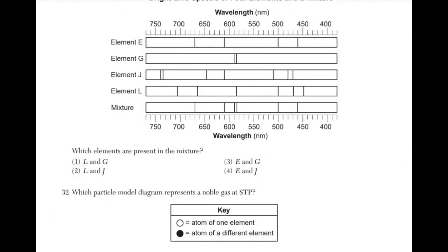Which elements are present in the mixture? In order to determine which elements are present in the mixture, you should look at the lines of the bright-line spectra and align it with those present in the mixture. Looking at these elements, you can determine that elements E and G are present in the mixture. Answer choice 3.